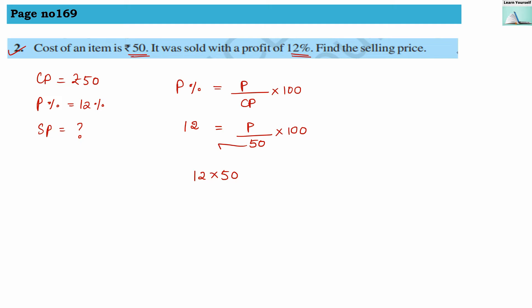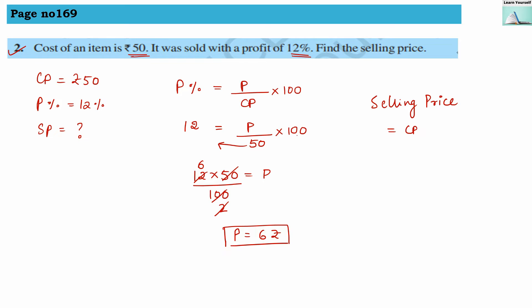Taking 50 to the other side, it goes to the numerator, and 100 goes to the denominator. Solving: 50 divided by 100 simplifies, and 12 divided by 2 gives 6. So profit is rupees 6. Selling price equals cost price plus profit: 50 plus 6 equals 56. So SP is rupees 56.